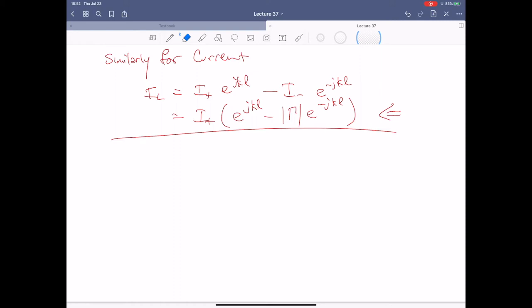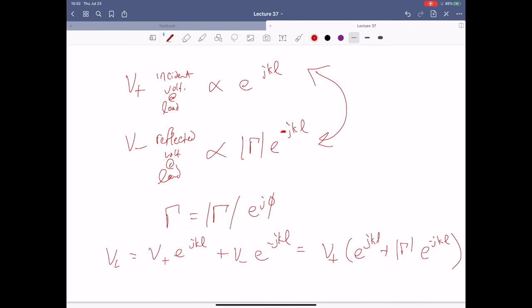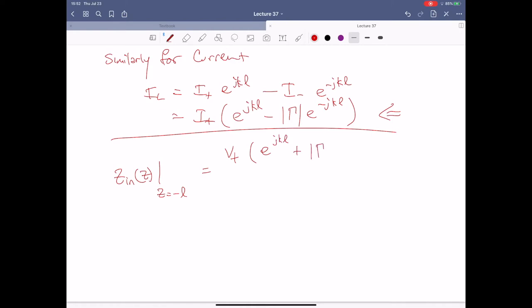To derive our expression for the input impedance, what we end up with is Z_in, Z evaluated at Z equals minus L. We're effectively looking at what's happening at the load, so we have to backpedal. This is equal to the ratio of these two guys, which is V_plus times E to the JKL plus gamma E to the minus JKL over I_plus E to the JKL minus gamma E to the minus JKL. These guys you can rope up together and make this equal to Z_naught. From here it's just a little bit of a simplification game.